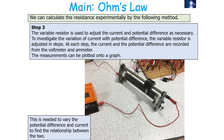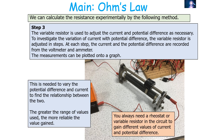The third step is to use a variable resistor to adjust the current and potential difference. To investigate the variation of current with potential difference, the variable resistor is adjusted in steps; at each step you record the current and potential difference from the ammeter and voltmeter, and plot the measurements on a graph. A greater range of values used gives a more reliable result, so always use a variable resistor to obtain a wide range of current and potential difference values.